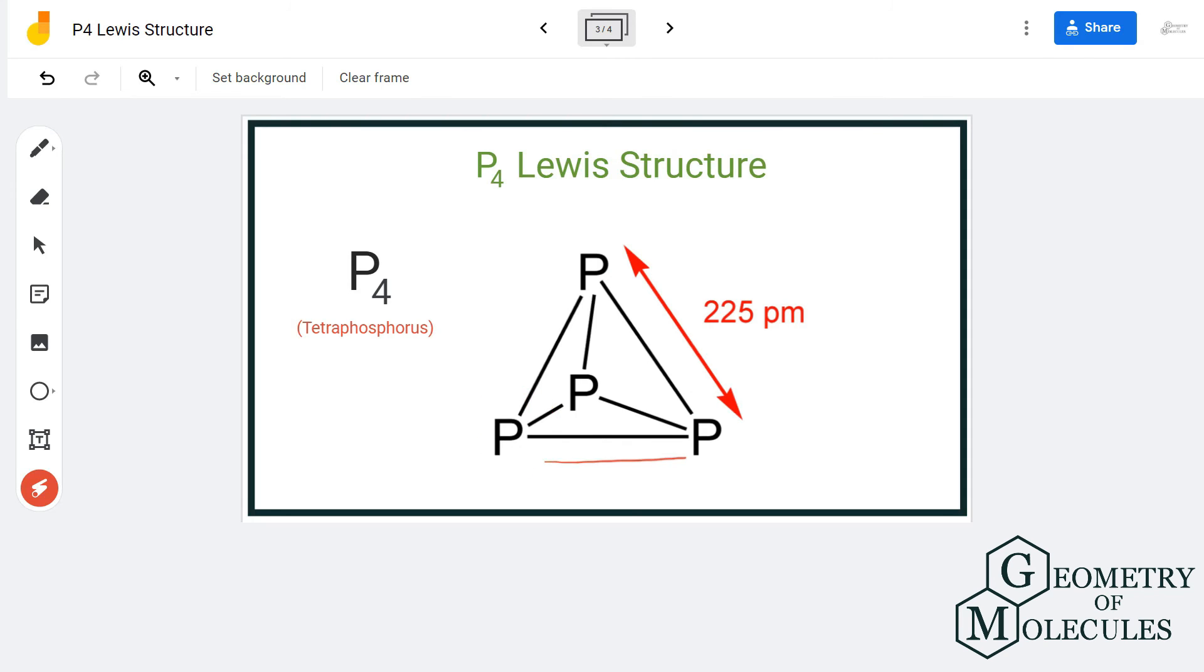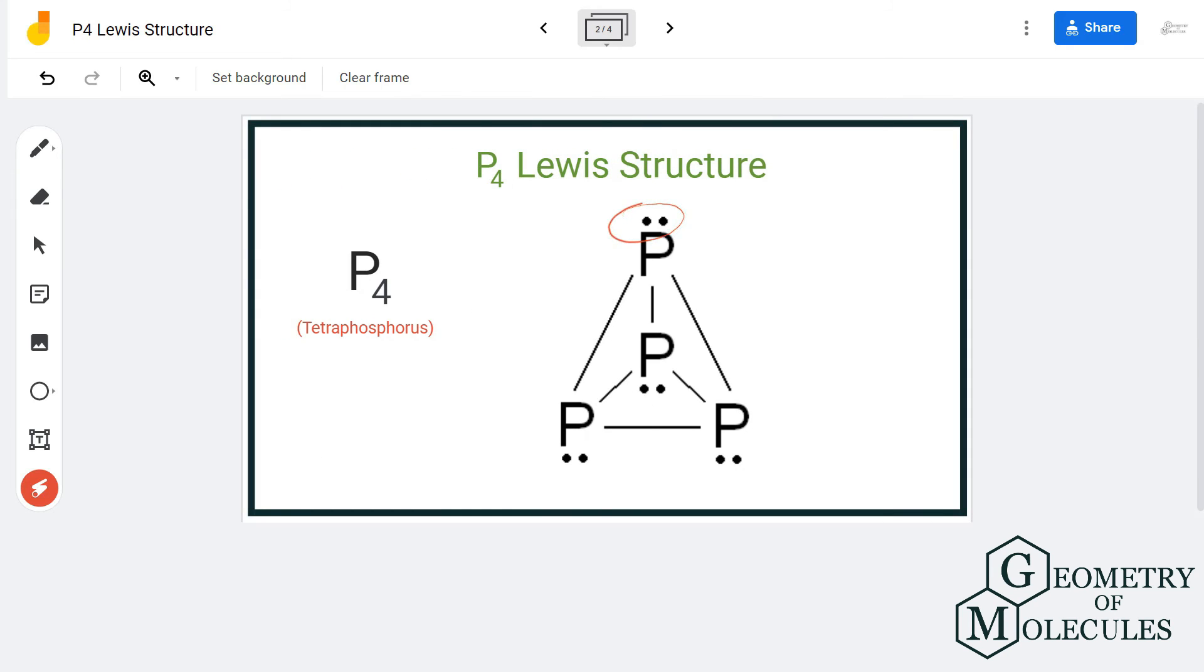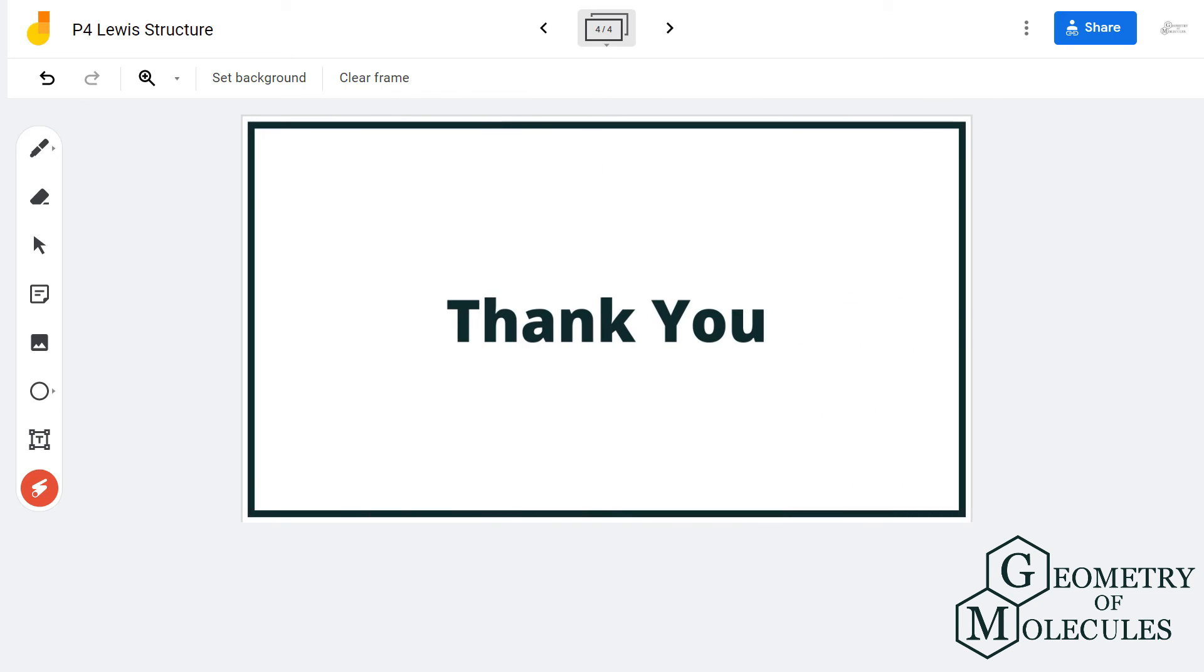So this is the Lewis structure of P4, in which the phosphorus atoms are forming bonds with each other and there's a lone pair of electrons on each phosphorus atom. I hope this helps you to understand the structure better, and for more videos on molecular geometry, Lewis structure, hybridization, make sure to subscribe to our channel. Thank you for watching.